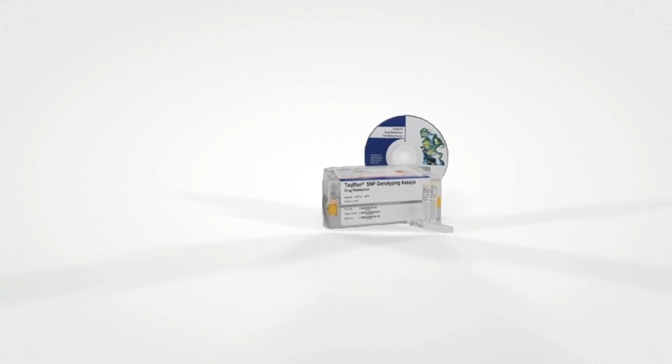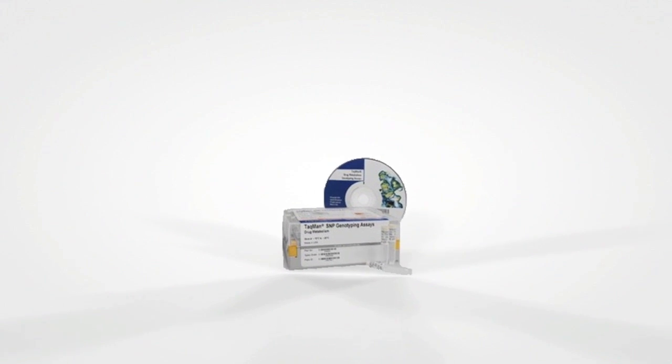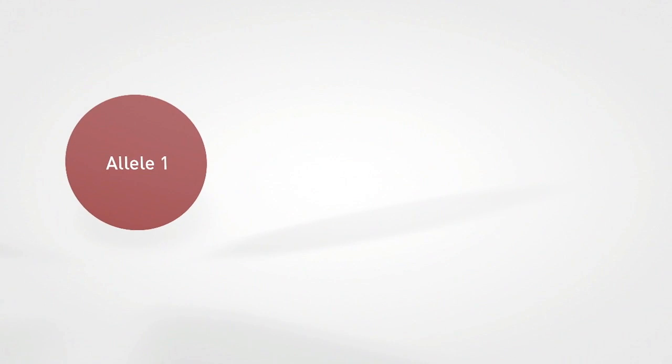So how does this work? First, let's review the basics of a TaqMan SNP genotyping assay. These assays are designed to resolve inherited SNP markers, for which three genetic states are possible: